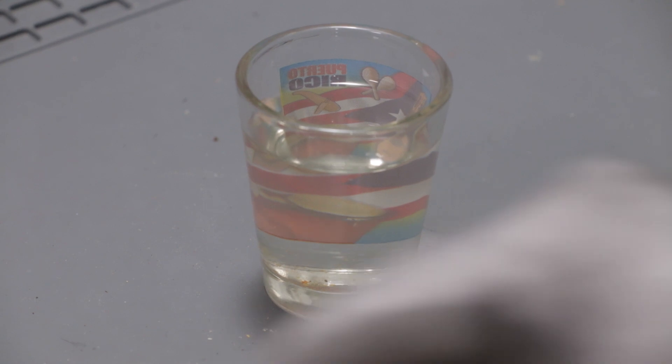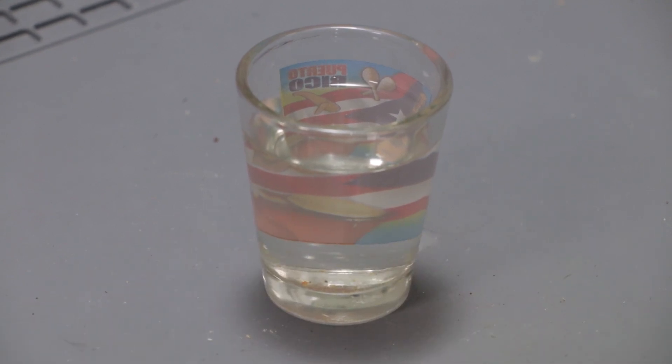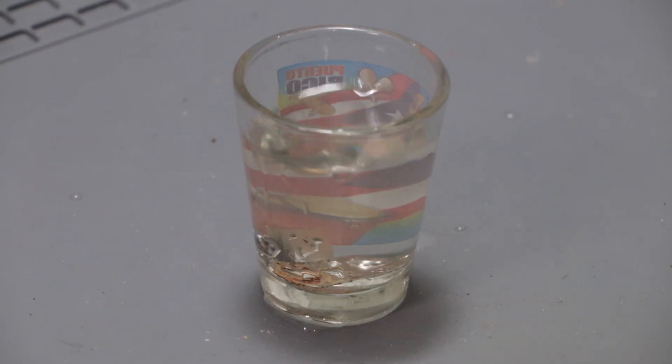To get rid of the rust, I drown both battery connectors in white vinegar. After an hour soaking and a wire brush, they come out like this.